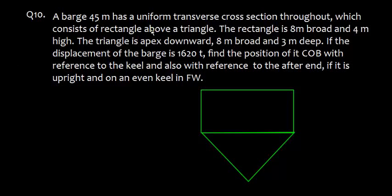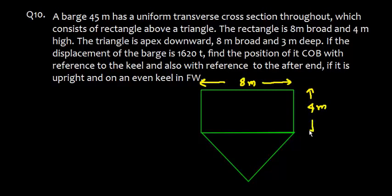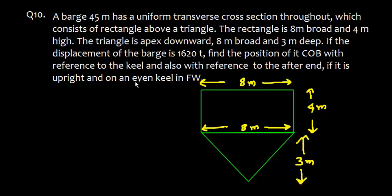A barge is 45 meters long with a uniform transverse cross-section throughout, consisting of a rectangle above a triangle. The rectangle is 8 meters broad and 4 meters high. The triangle has its apex downward, is 8 meters broad — the same width as the rectangle.